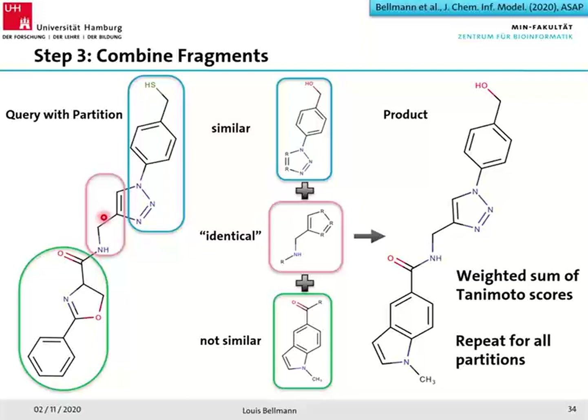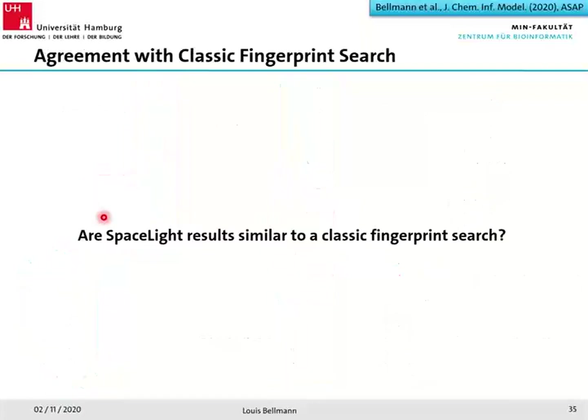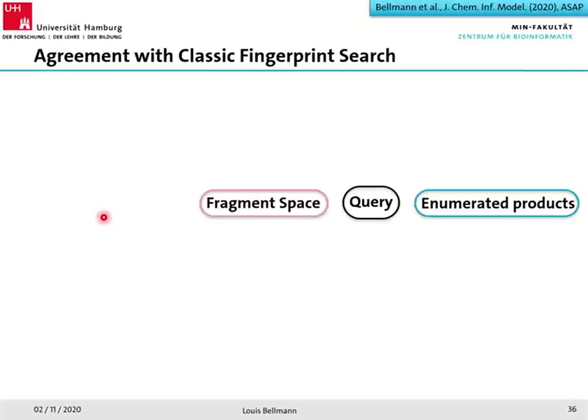This is the overview of the algorithm. Now that I've explained the method — incorporating classic fingerprints in a combinatorial search approach — the natural question is: how similar are the results from SpaceLight to a classic ECFP4 search?